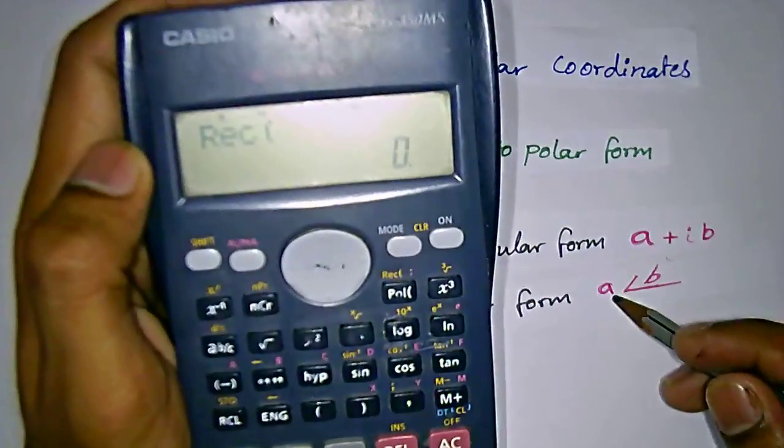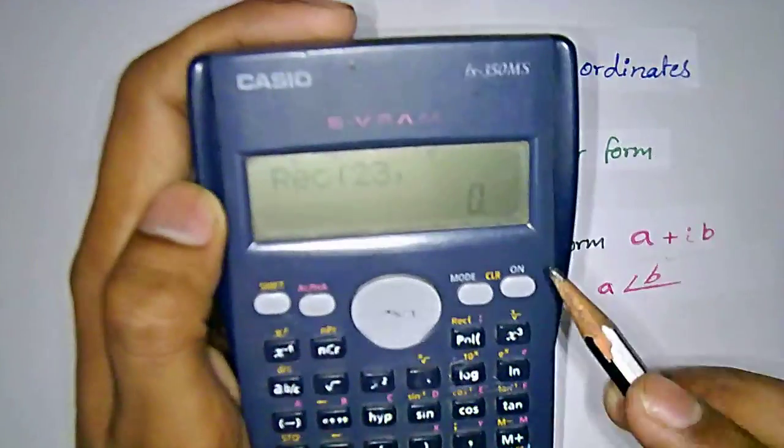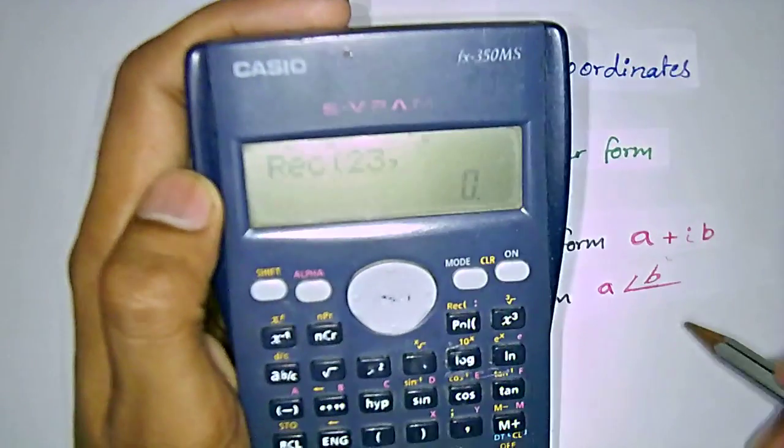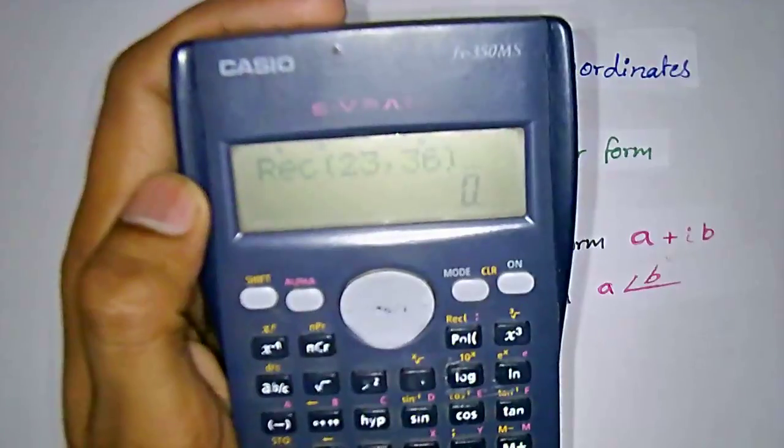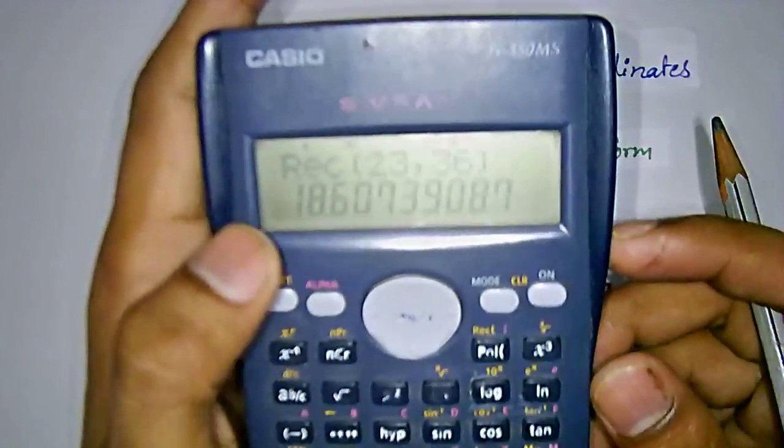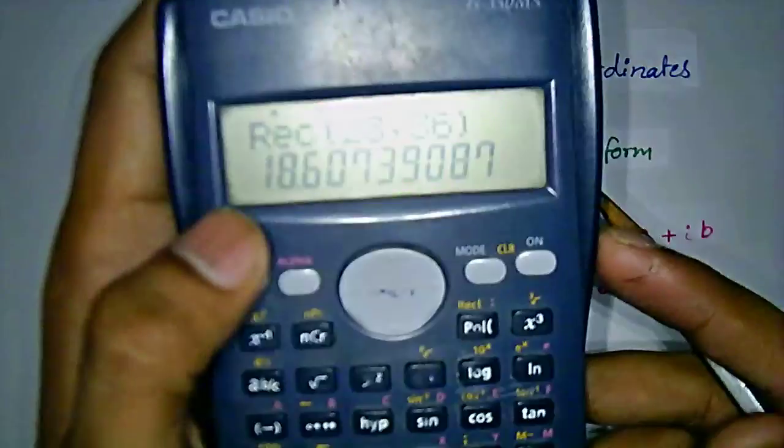You want to put modulus value here, and separately by putting comma, separate the angles. If you press equal, it gives the direct value of the real part of rectangular form.